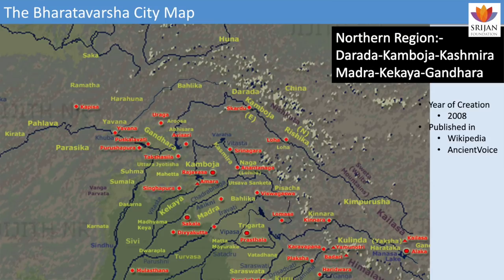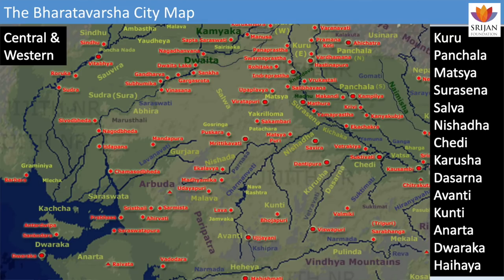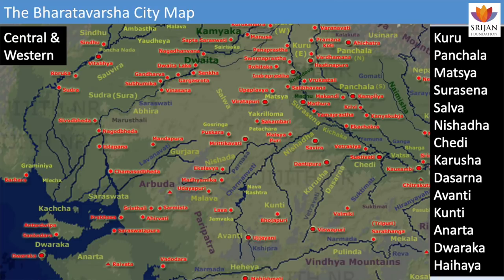You have the Kekaya kingdom — where Kaikeyi of Ramayana was from, and also mentioned in Mahabharata as the source of Pandava allies, the Kekaya brothers. In the central-western region, you can see many other kingdoms, including Kunti — a kingdom whose princess took that same name, just like Panchali got her name from Panchala. You have Heihaya and its capital Mahishmati — that kingdom was portrayed in the movie Baahubali, but actually Mahishmati is the capital of the Heihaya kingdom as mentioned in both Mahabharata and Ramayana.